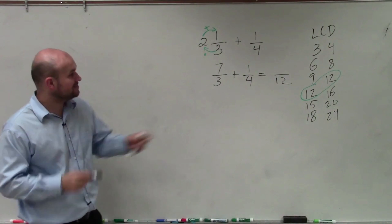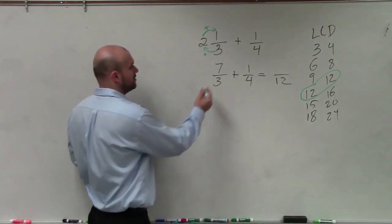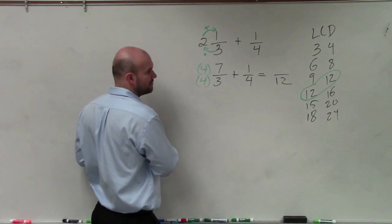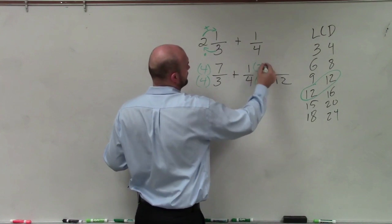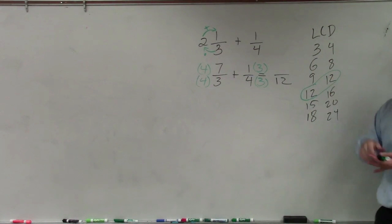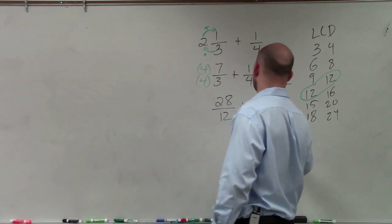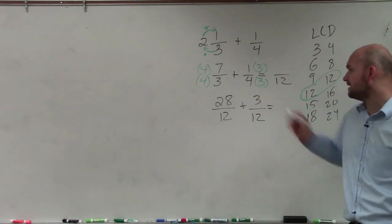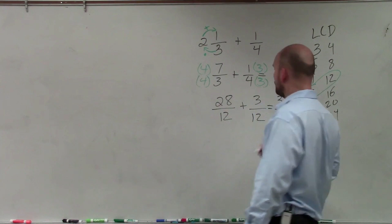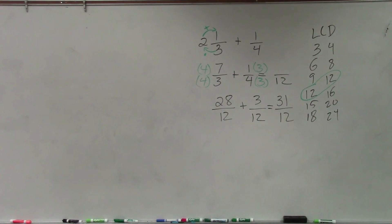Before we can add, we need to make sure we have common denominators. I need to see what I multiply 3 by to get to 12 — that's 4. Since I need equivalent fractions, I multiply by 4 over 4. For the other fraction, I multiply by 3 over 3. Multiplying straight across, I have 28 over 12 plus 3 over 12. Since they have the same denominator, I combine numerators: 28 plus 3 is 31 over 12. This would be the same if you were subtracting — you'd just subtract the numerators.